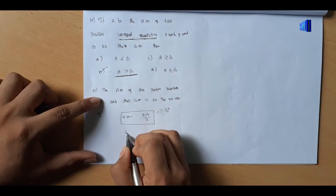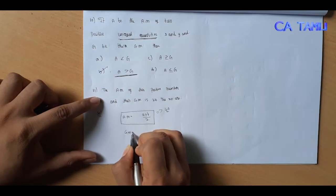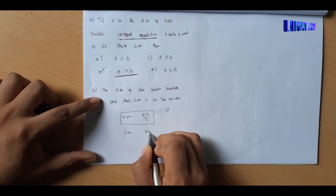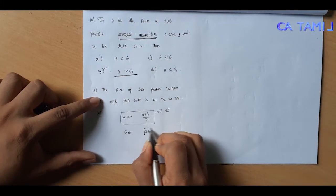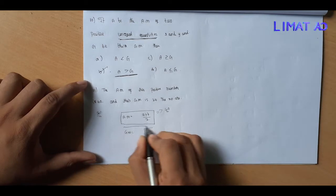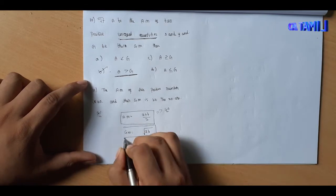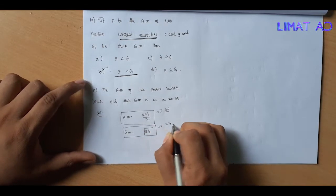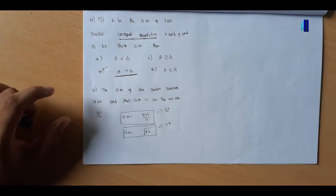What do you do with GM? The GM property is A into B divided by root, and that answer is 24.